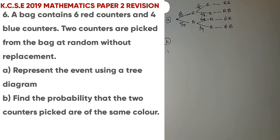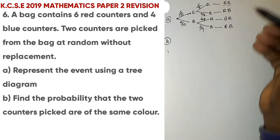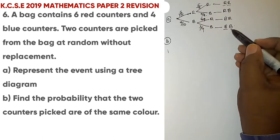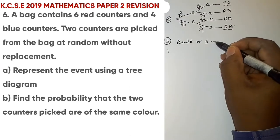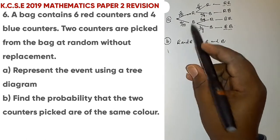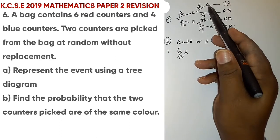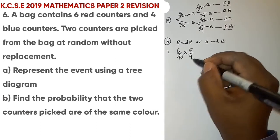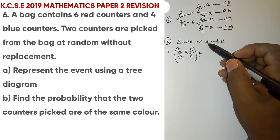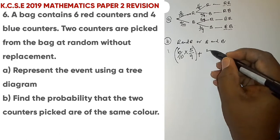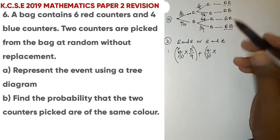For part B, you are asked to find the probability that the two counters picked are of the same color. That means either both red or both blue. The probability of picking red first is 6 out of 10, and the probability of picking red as the second counter is 5 out of 9. In probability, 'and' means multiply, and 'or' means add.